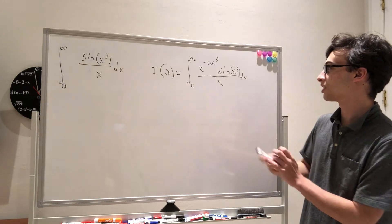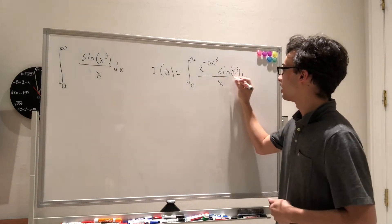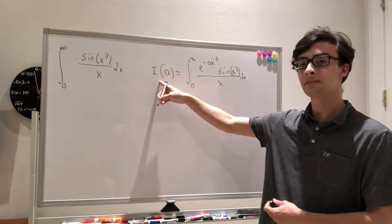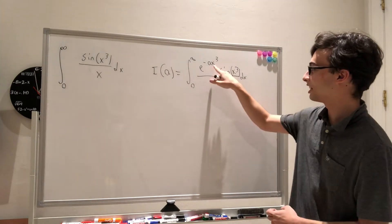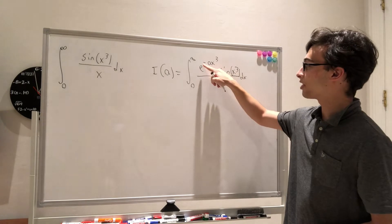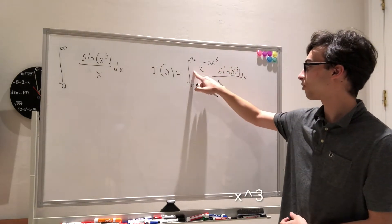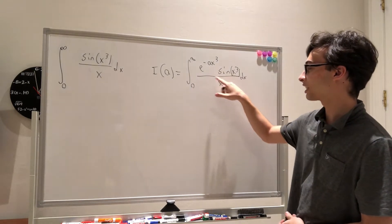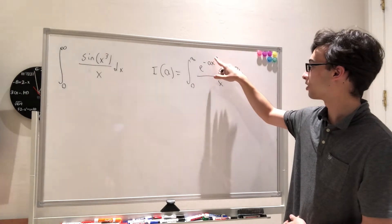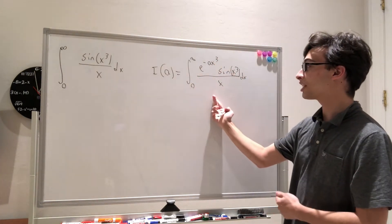Let's look at some similarities. We have an 'a' up here, and this x cubed is the same as this x cubed inside the sine. The reason I did this is that when we take the derivative of I of a with respect to a, taking the derivative of the inside — by chain rule — will leave a negative x cubed from the exponent, and one of those x squareds will cancel with the x in the denominator, leaving an x squared in front. Then we can do a u-sub to get rid of the x cubed terms, and we can actually solve the integral in terms of a.